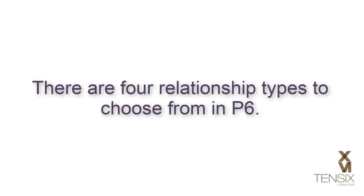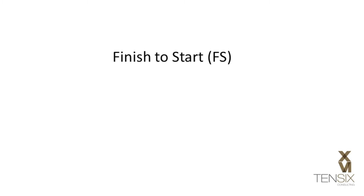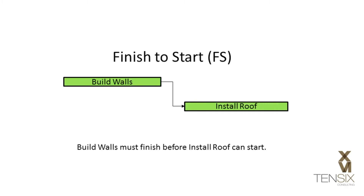There are four relationship types to choose from in P6. The first is Finish to Start, which is the most commonly used relationship. In this example, when 'build walls' is finished, then 'install roof' can start.